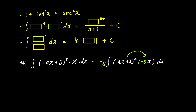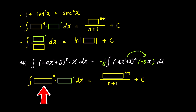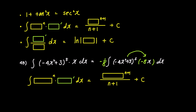Now, if you see the pattern of a certain power of a term multiplied by its derivative, you can use the box rule formula for quick integration. All you need to do is multiply by -4/8. Plug in the yellow box (-4x² + 3) and the green box prime (-8x) for the derivative, setting n to 5, the same value as in the problem.